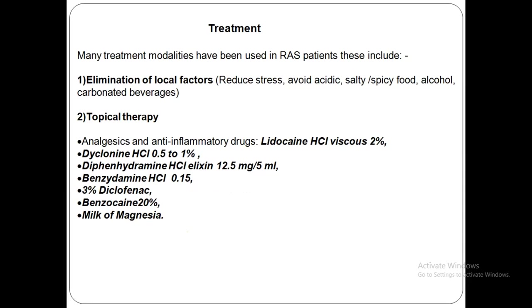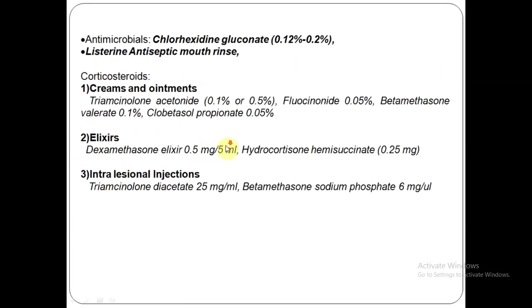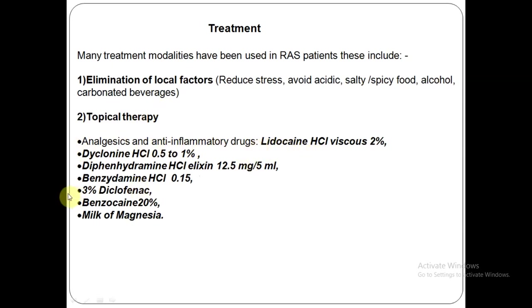Coming to the treatment aspect, as we discussed the probable etiology of apthous ulcers, there is no very specific treatment regime — it is a more generalized kind of treatment. First, you would try to eliminate all local factors, try to reduce stress, avoid acidic, salty, or spicy food, and abstain from alcohol or carbonated beverages or any other possible causes. The next step is topical drugs — analgesics or anti-inflammatory drugs, antimicrobials, or corticosteroids. Under analgesics and anti-inflammatory drugs, we have lignocaine, diphenhydramine, benzydamine hydrochloride, milk of magnesia, etc.